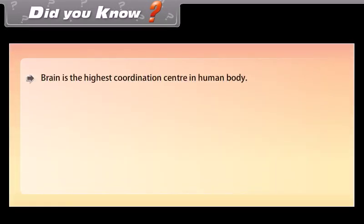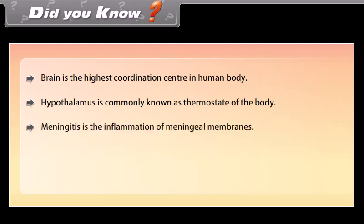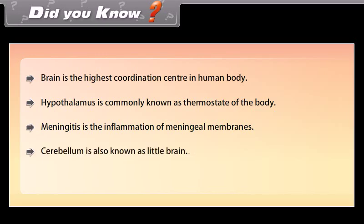Did you know? The brain is the highest coordination center in the human body. The hypothalamus is commonly known as the thermostat of the body. Meningitis is the inflammation of the meningeal membranes. The cerebellum is also known as the little brain.